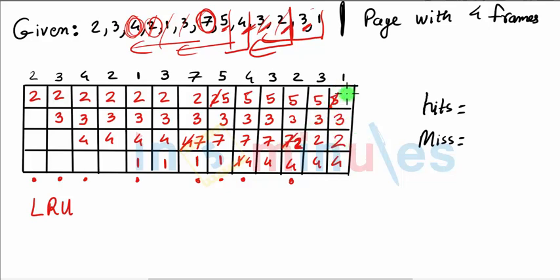So let's try to calculate how many hits and how many misses. This example gave us 4 hits, and the remaining would be 9 misses. Thank you.